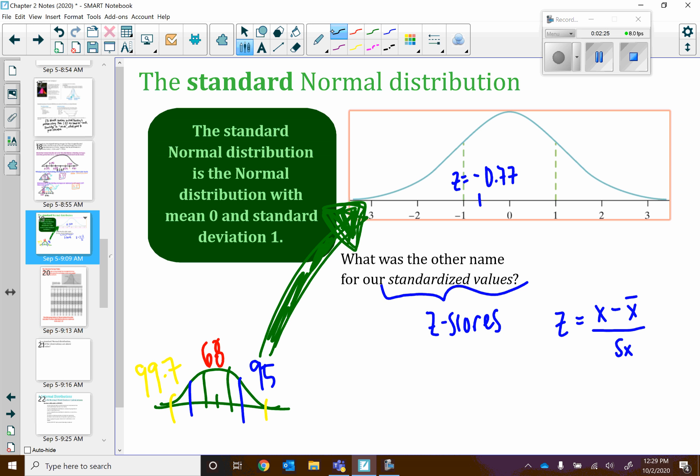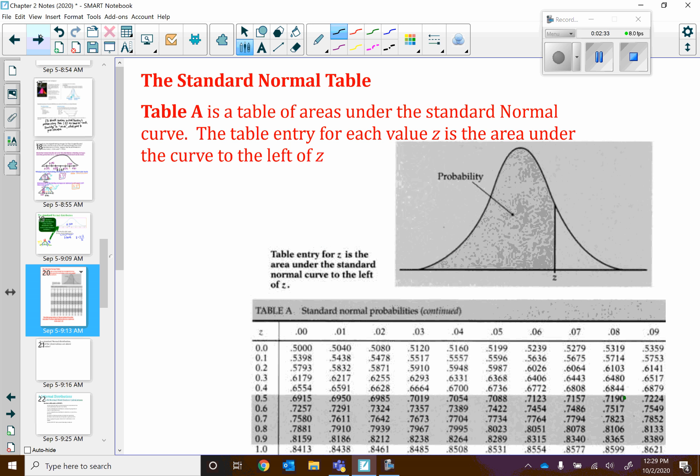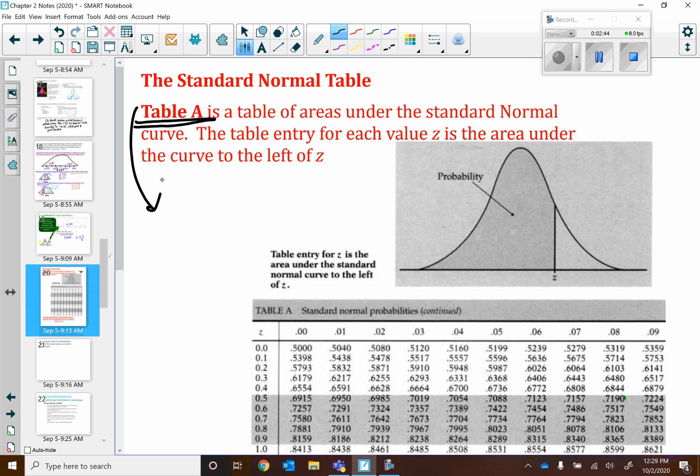Good news. We can still figure out a lot about that value. So we're going to look at something called the standard normal table, otherwise known as table A. Now, I have this image in your notes, and so we should definitely look at that. But I will also point out this table A is a part of your formula sheet. It's in the back of the formula sheet, and this table is also in the back of your textbook. So you will be using both of these, either your formula sheet or your textbook for your homework.